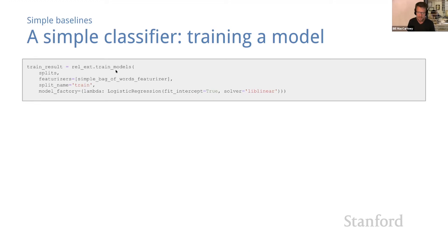This takes as arguments the dictionary of data splits, a list of featurizers—and here we have a list consisting of just our simple bag of words featurizer—the name of the split on which to train, which defaults to train, and a model factory which is a function that returns a classifier. It's a function which initializes an sklearn classifier. By default it's a logistic regression classifier as shown here, but you could easily substitute this with some other sklearn classifier.